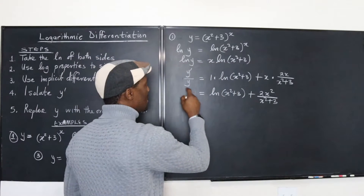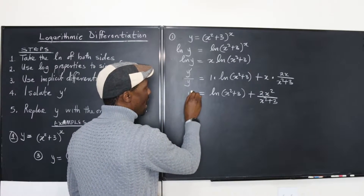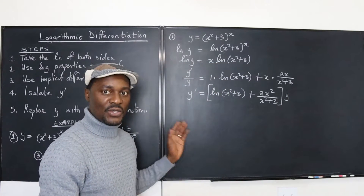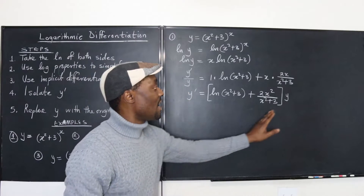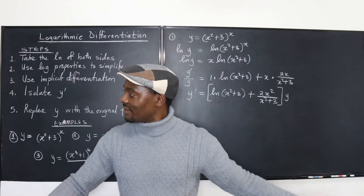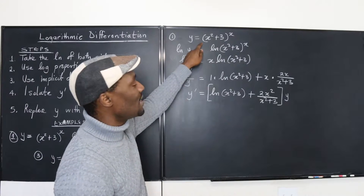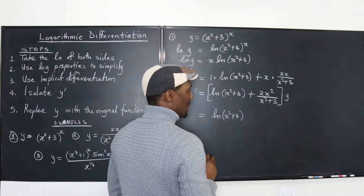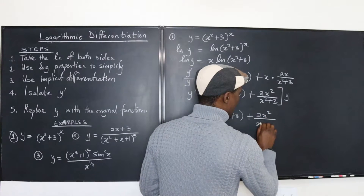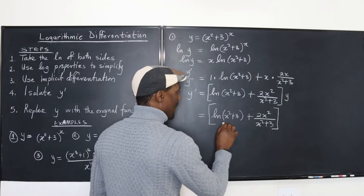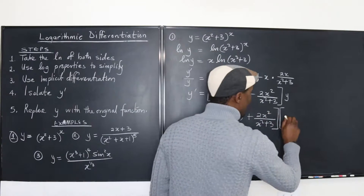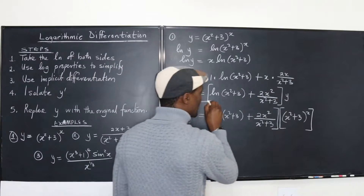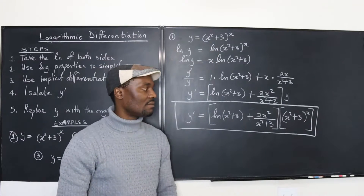What I have is y prime over y. If I multiply both sides by y, I get y prime isolated. The last step is to replace y with the original function. So y prime equals the natural log of x squared plus 3 plus 2x squared over x squared plus 3, all multiplied by x squared plus 3 to the x. That is y prime — I have successfully taken the derivative of this function, and it's clean.